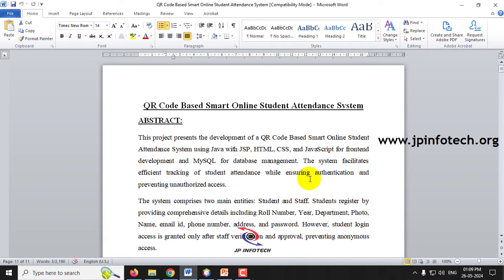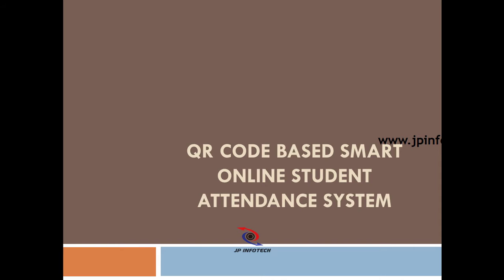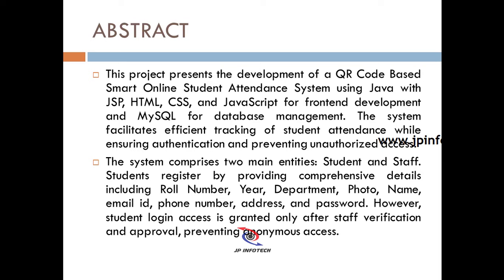In a typical student attendance system, the staff marks attendance in class and then updates those details on a computer using Excel or some other form — it is not completely computerized, having both manual and semi-computerized processes. To overcome these issues, we are proposing a new QR code based smart online system so that the process will be completely automated. Let us now see the PPT quickly.